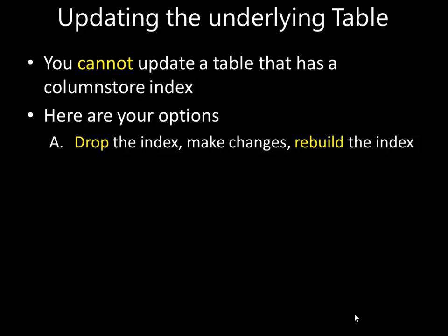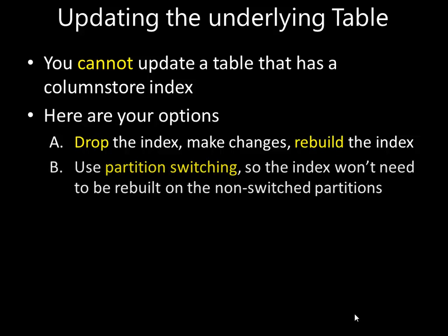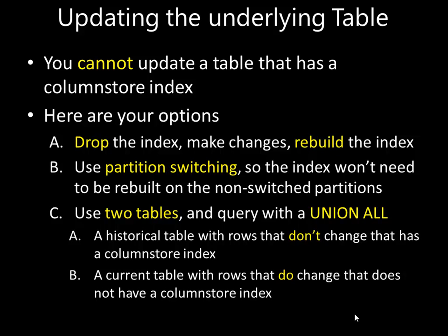If the table is not that big, dropping and rebuilding is probably fine. If the table is big, you probably partitioned it anyway and you can use partition switching — create a temporary table, put the updated partition rows into that table, add a column store index, and then switch that partition into the partition table. A third option is to use two tables: a historical table with rows that never change with a column store index on it, and a more recent table without a column store index where you make your changes. When you query the overall data, use a UNION ALL.